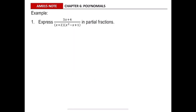In this example we want to express the fraction in partial fractions. The fraction has two factors in the denominator: x plus 2 and x squared minus x plus 1. Here, x plus 2 is a non-repeating linear factor, and x squared minus x plus 1 is a quadratic factor that cannot be factorized, so the fraction is decomposed as a sum of two fractions.